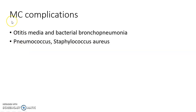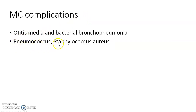The most common complications of measles are otitis media and bacterial bronchopneumonia. These are due to secondary infection by pneumococcus or Staphylococcus aureus. Remember, these complications are due to widespread mucosal damage and significant immunosuppression.